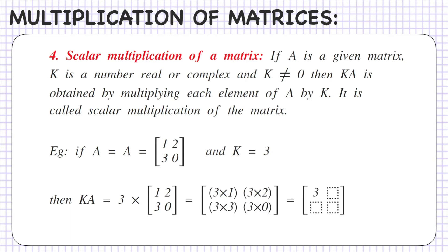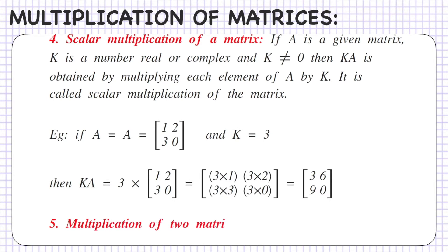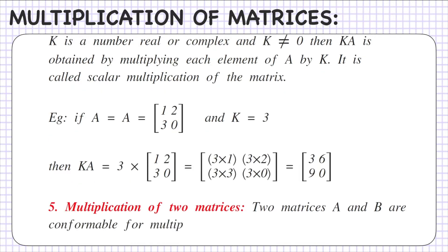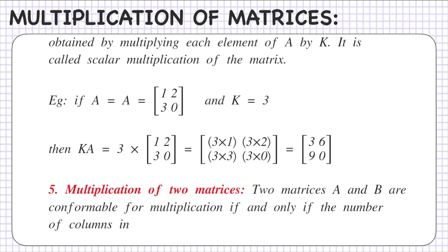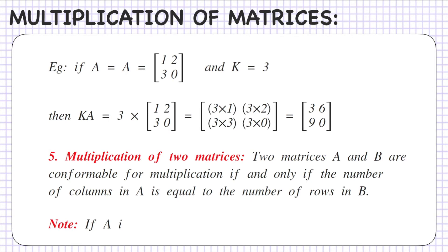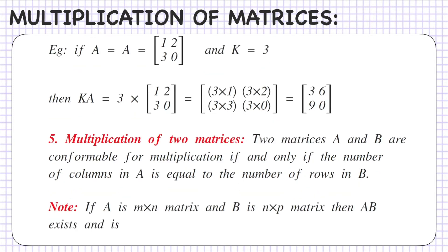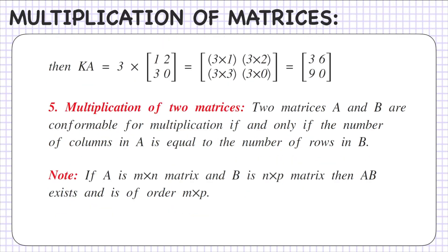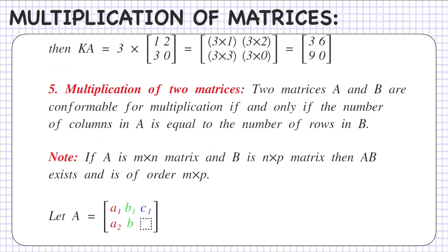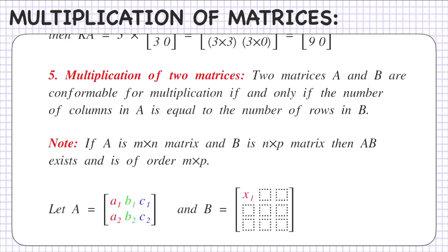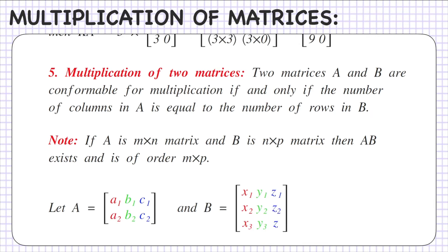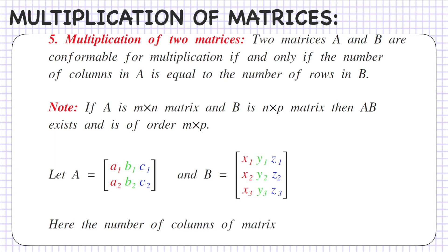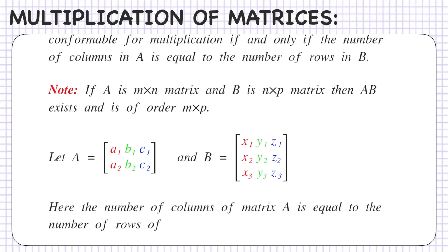Fifth: multiplication of two matrices. Two matrices A and B are conformable for multiplication if and only if the number of columns in A equals the number of rows in B. If A is an M×N matrix and B is an N×P matrix, then AB exists and is of order M×P. For example, if A is 2×3 and B is 3×3, the number of columns of A equals the number of rows of B, which is 3, so AB can be found and the order of AB will be 2×3.